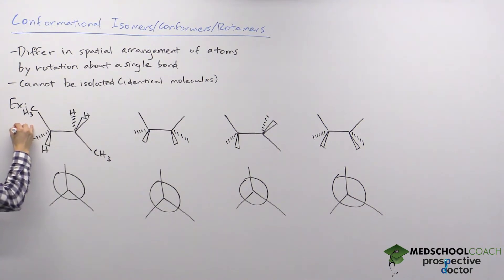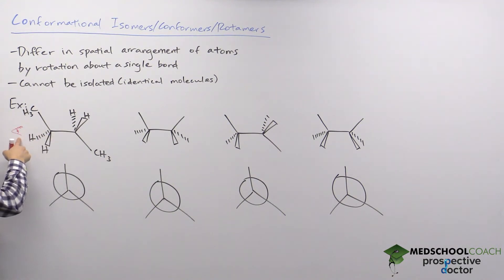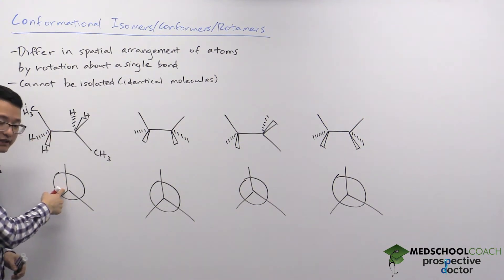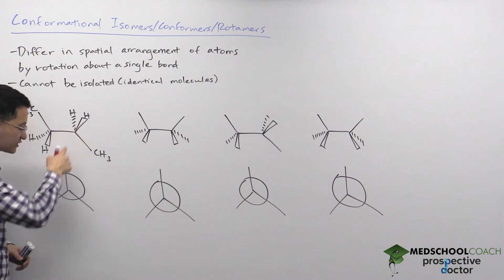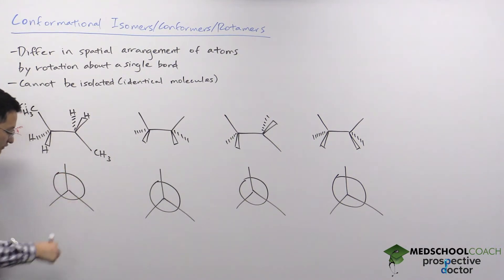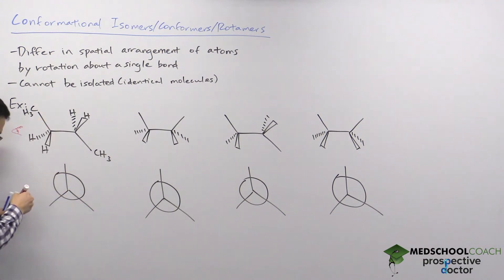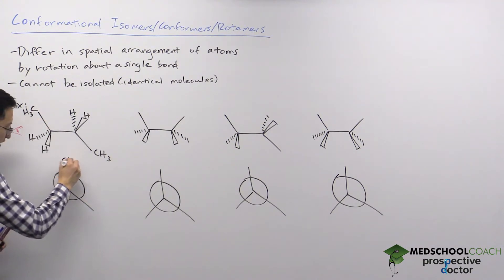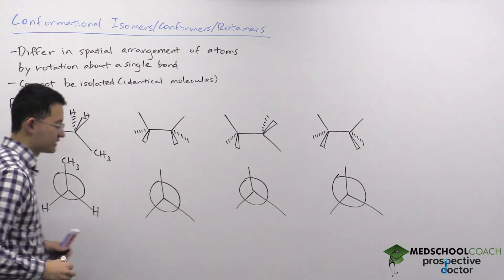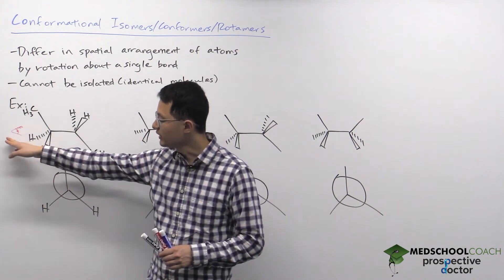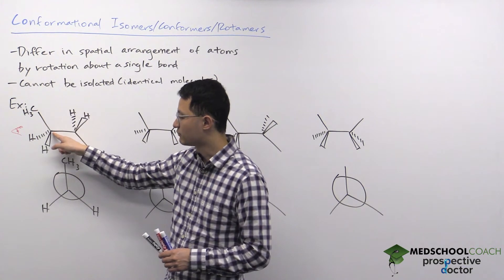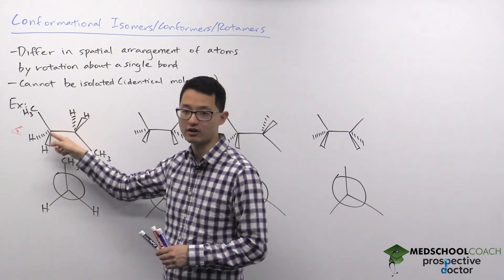We're viewing this molecule from the left side. The first thing the eye sees is the front central carbon atom. In the Newman projection, the front carbon is represented by a dot. Looking at the front carbon, we can see there's a methyl group pointing straight up and hydrogen atoms facing the bottom left and bottom right. The Newman projection lets us identify what substituents are connected to this first carbon atom.